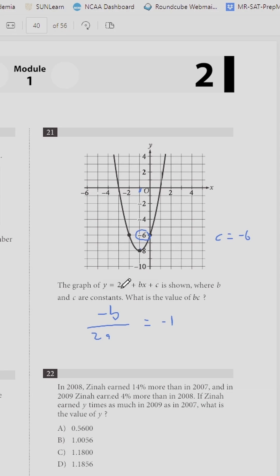Remember that a in this case is 2, so it would be -b/4, because 2 times 2 equals 4, equals -1.